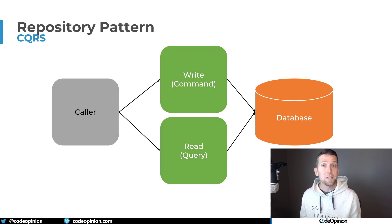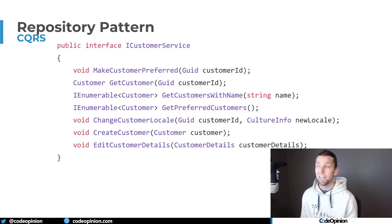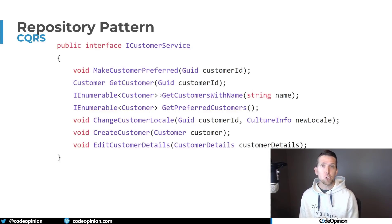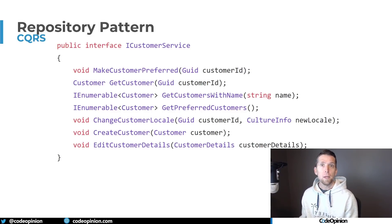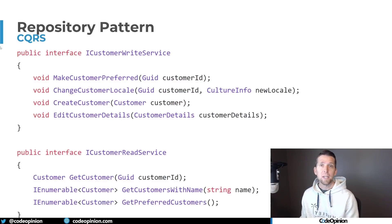You could still be using the same schema, the same database. You don't need to be using multiple databases. It's just about setting the read path and the write path in different directions. To visualize what that looks like in code: if you have a customer service with a mixture of commands and queries, splitting it up means one service for writes and one for reads.